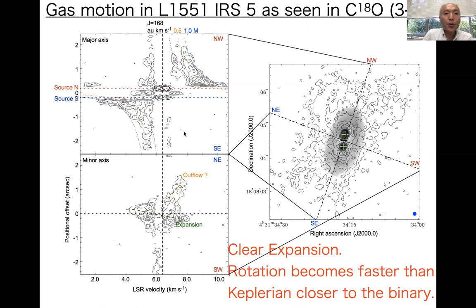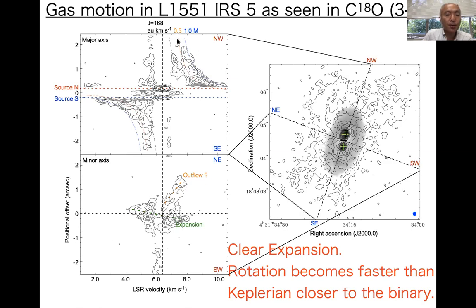Next, let me show the result of the molecular line. This right panel shows a moment zero map of C18O 3-2 emission in contour, and the gray scale is the 0.9 mm continuum emission from the last slide. Along the major and minor axes of this circumbinary disk, we made position-velocity diagrams in C18O 3-2. Along the major axis, you can see clear spin-up rotation signature. These dotted curves show Keplerian rotation with 0.5 and 1 solar masses. This spin-up signature is approximately consistent with Keplerian rotation.